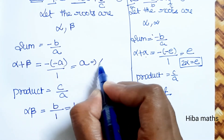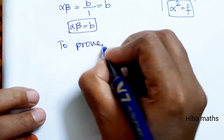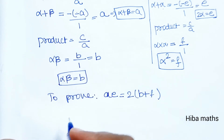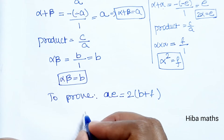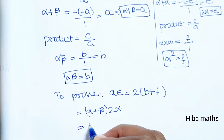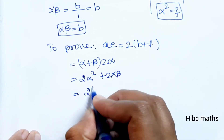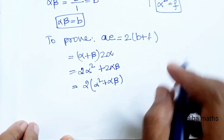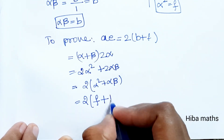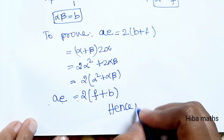Now to prove a·e = 2(b + f): we have alpha + beta = a and e = 2·alpha. So a·e = (alpha + beta) · 2·alpha = 2·alpha² + 2·alpha·beta = 2f + 2b = 2(b + f). Hence proved.